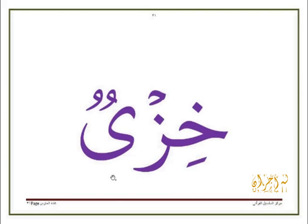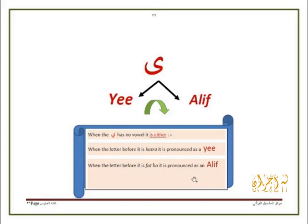Now for this letter, you can see that it has no diacritical marks — no فَتْحَة, ضَمَّة, كَسْرَة, سُكُون, تَنْوِين, or شَدَّة. Therefore, this letter is sometimes pronounced like an alif and sometimes like a يَ. So how do we know if it is an alif or a يَ? Let's find out.